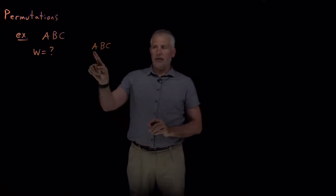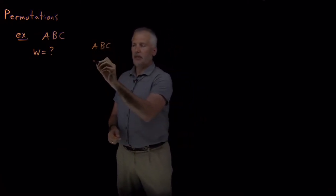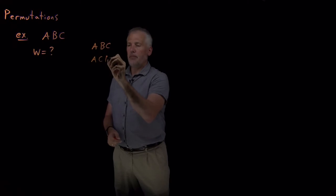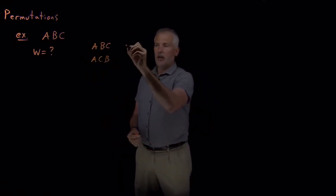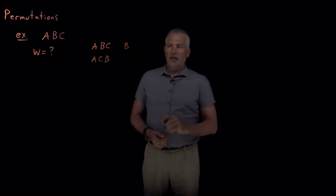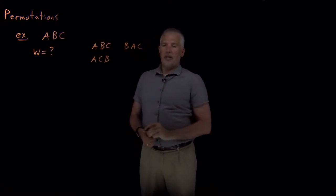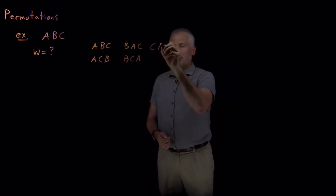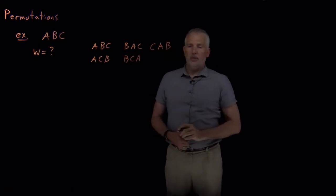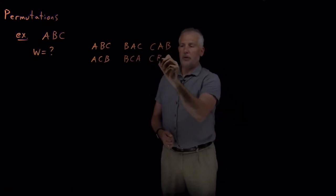I can keep the A at the front and swap the B and the C, so that would give me A, C, B. That's the only ways of doing it with an A in the front, but I can put another letter at the front. I can put a B at the front and then write the other two letters, or I can swap the other two letters. Or instead of putting the B at the front, I could have put the C at the front with the other two letters in either of the two different orders.